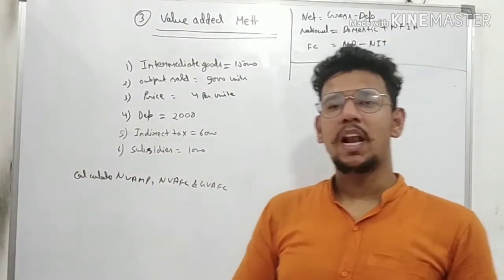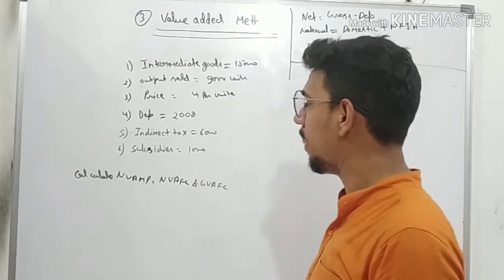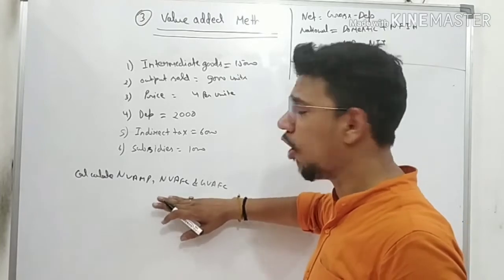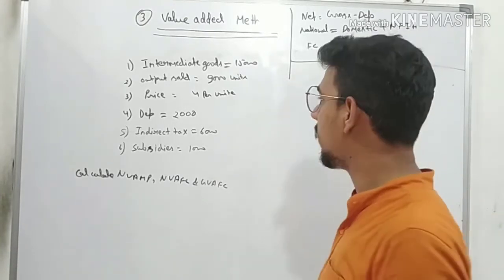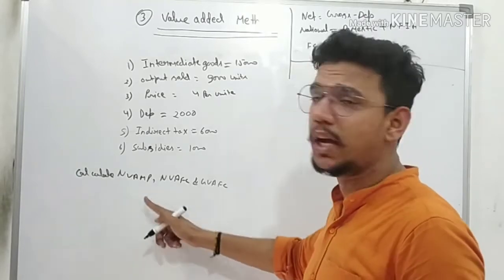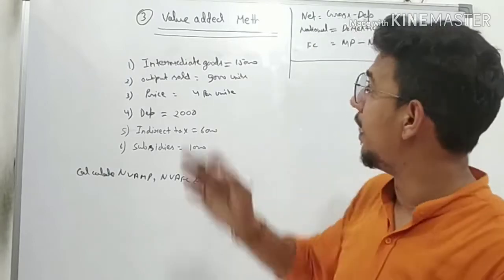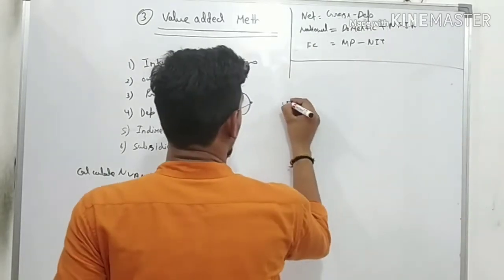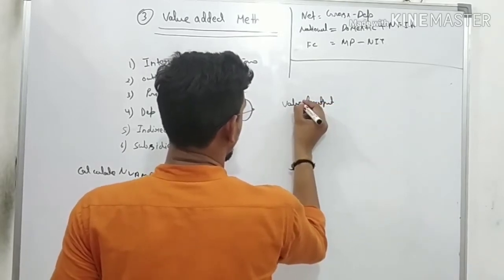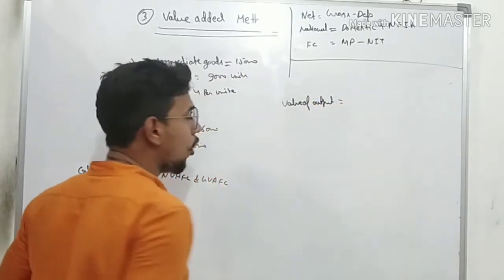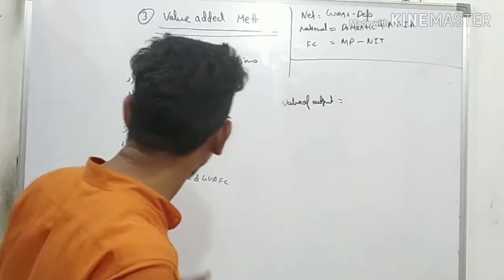Now let's solve the first question from 2012. You need to calculate NVA MP. In the value-added method, what do we find first? Value of Output. The formula for Value of Output is: price into quantity, or sales plus change in stock.